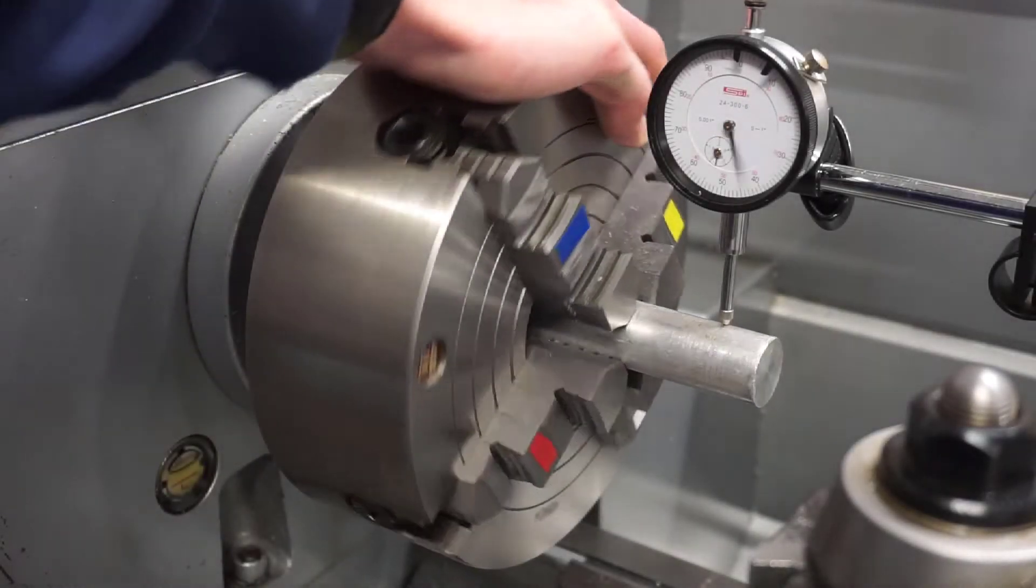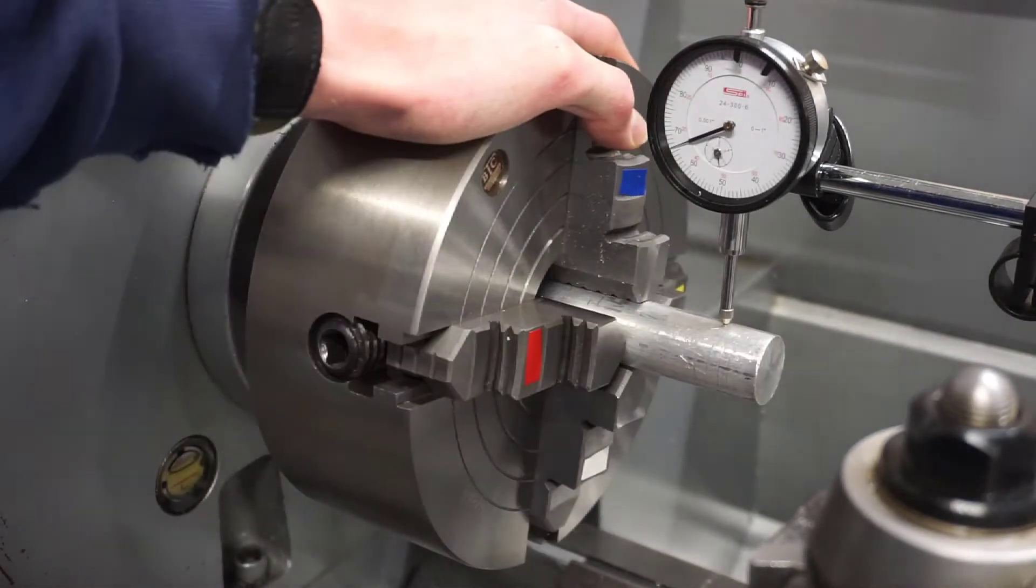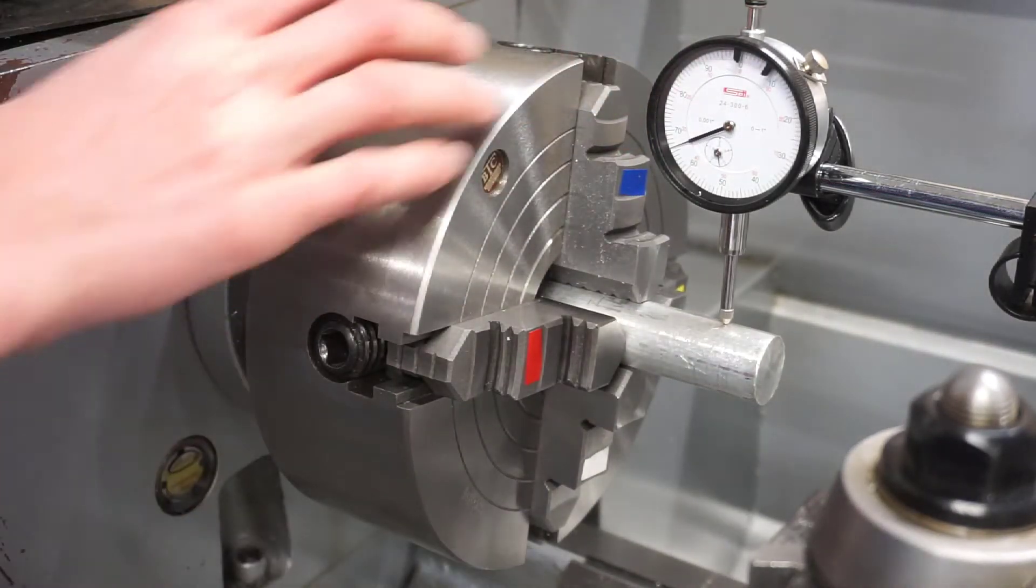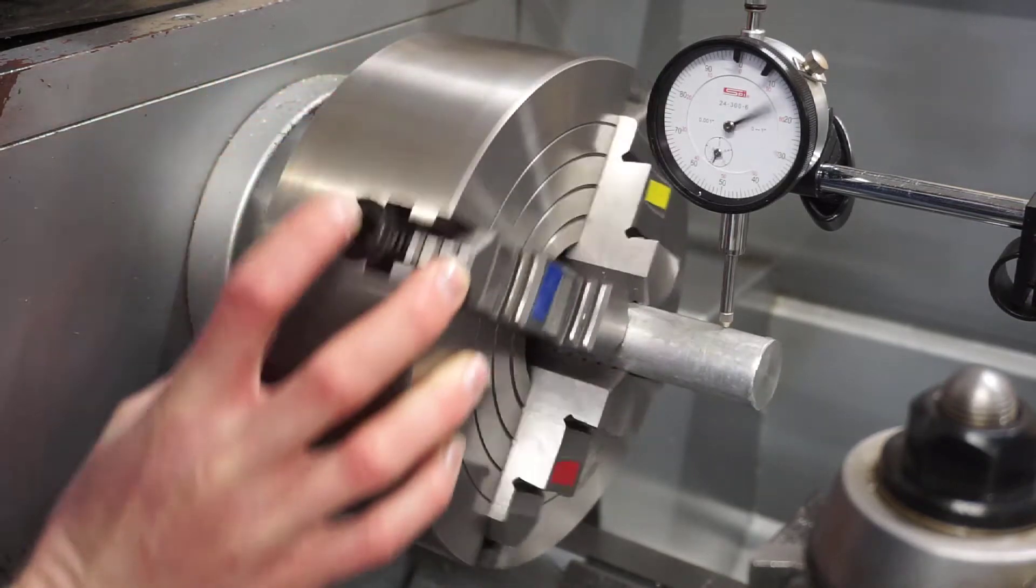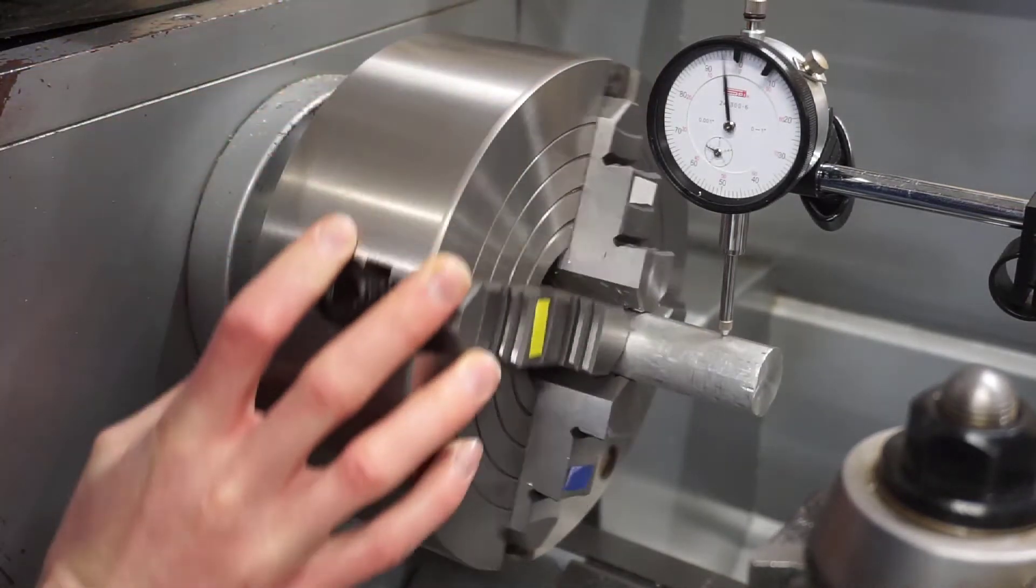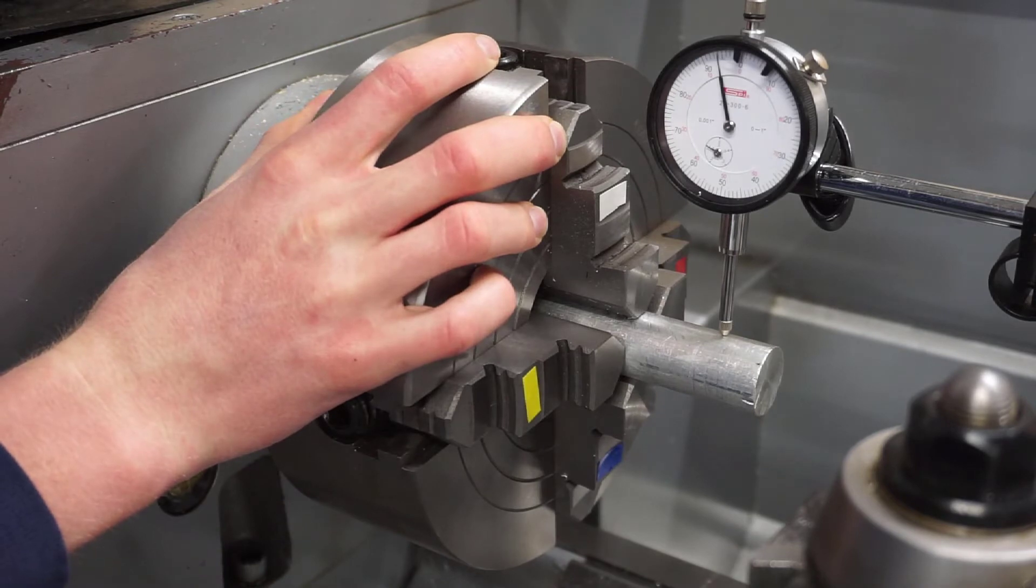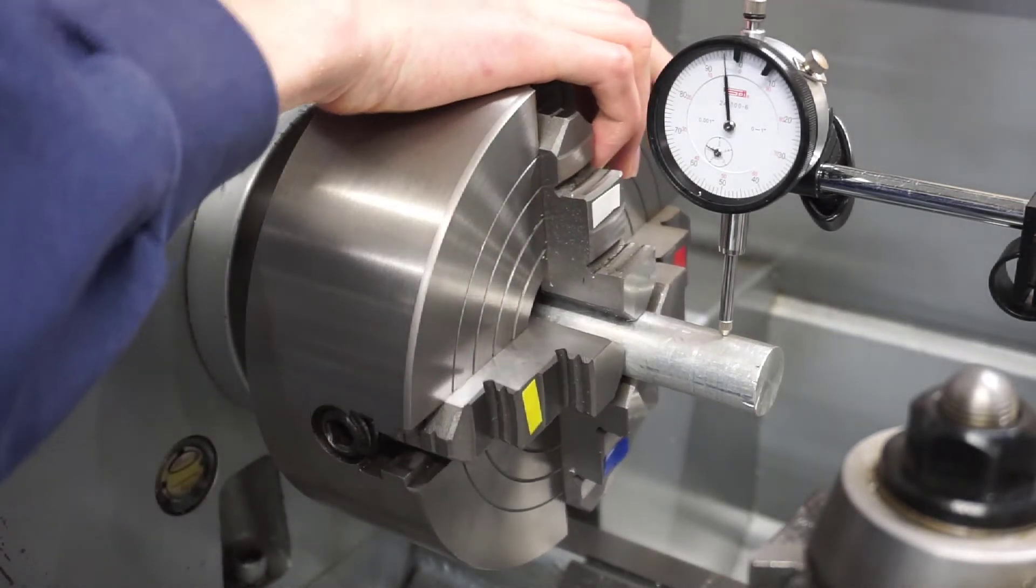Now that we've visually aligned our part and used the dial indicator to find the top of the part, we're now going to use the dial indicator to zero the runout. You'll notice that in this particular mount, the jaws have tape on them to pair them. So I've got a blue and a white, and a red and a yellow.